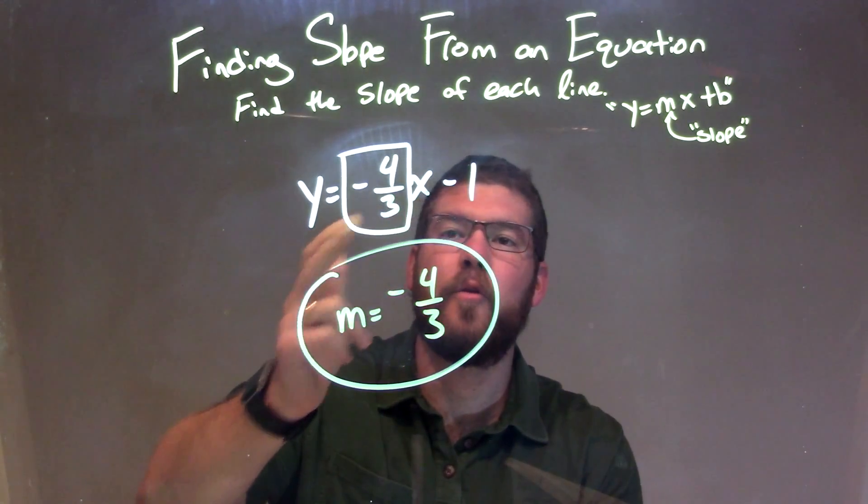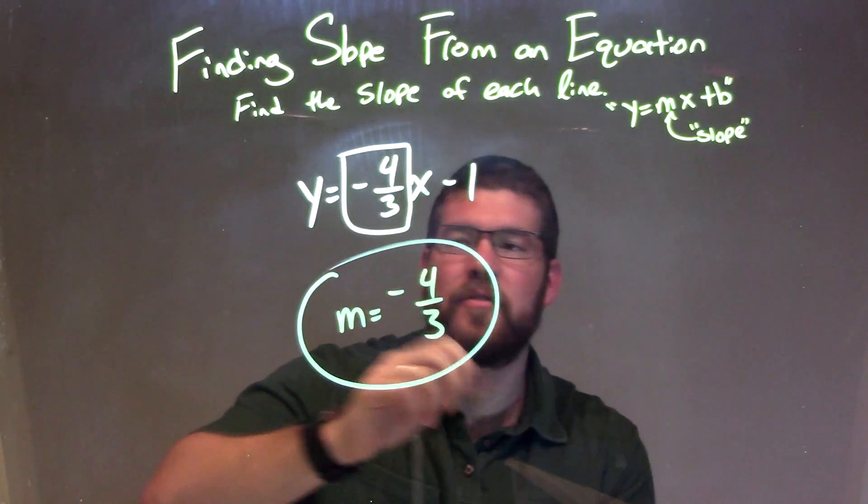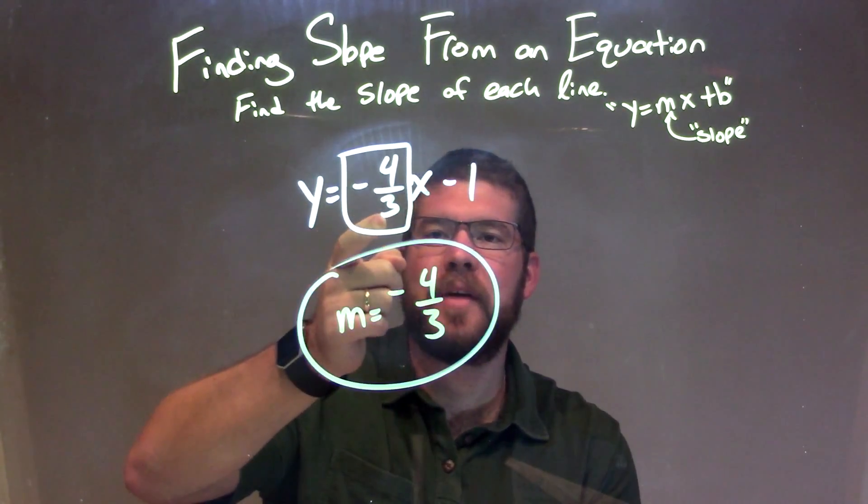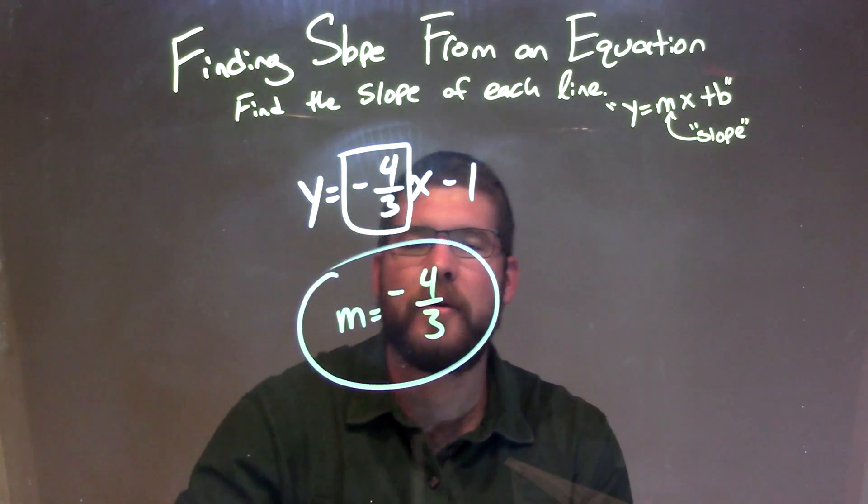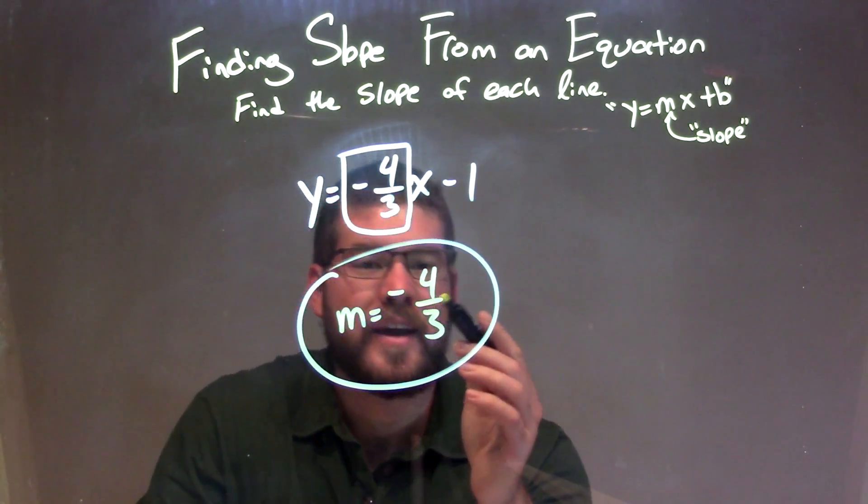Once we can identify the coefficient in front of x in our form, it looks like this, our slope intercept form: y equals mx plus b. And our m value is our slope, so our final answer is negative four-thirds.